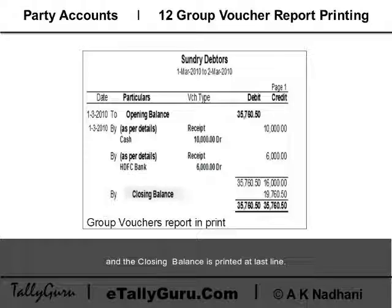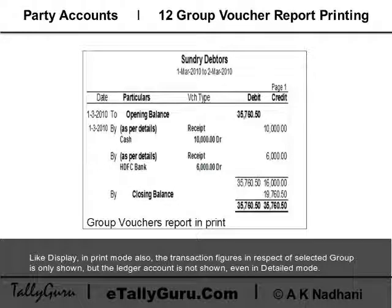Similar to the flash line in display mode, in print mode also, only the transaction figures in respect of the selected group are shown. However, the ledger accounts are not shown, even in detailed mode.